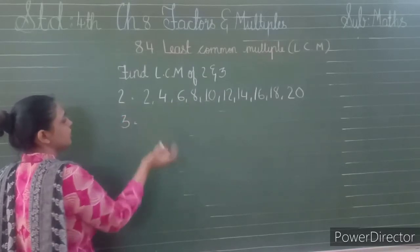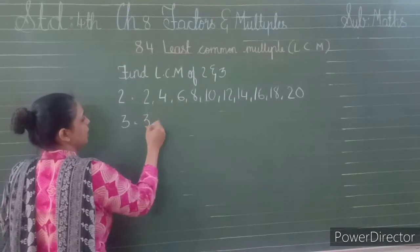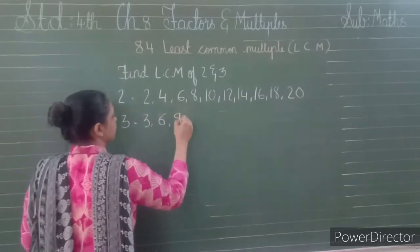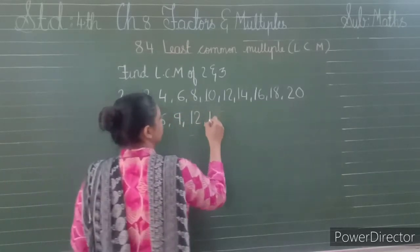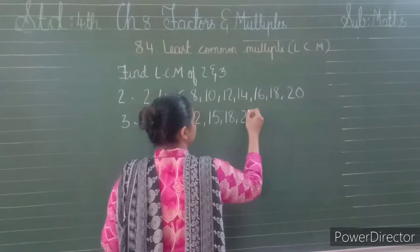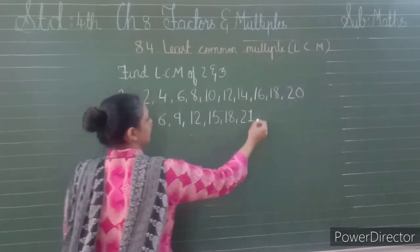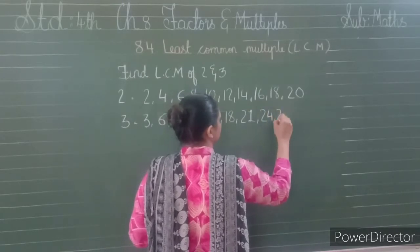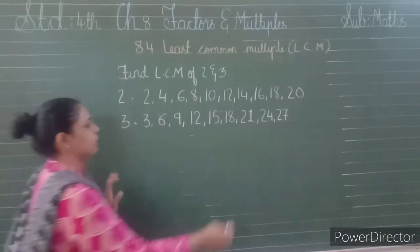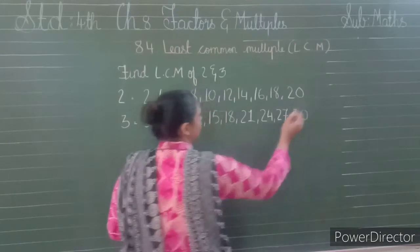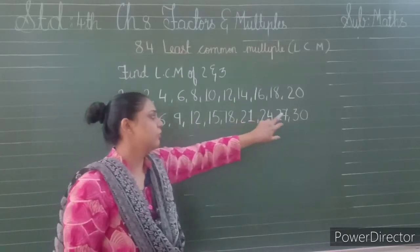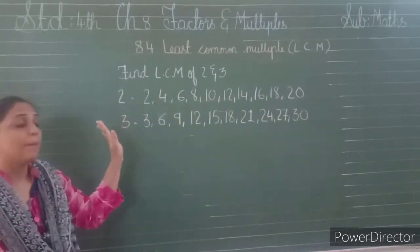Now, the multiples of 3: 3 ones are 3, 3 twos are 6, 9, 12, 15, 18, then 21, 24, 27, and 3 tens are 30. So what are the multiples of 3: 3, 6, 9, 12, 15, 18, 21, 24, 27, and 30 — these all are the multiples of 3.